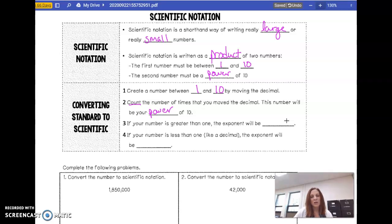If the number is greater than 1, your exponent will be positive. Think big numbers positive. If it's less than 1, so really tiny numbers, the exponent is going to be negative.